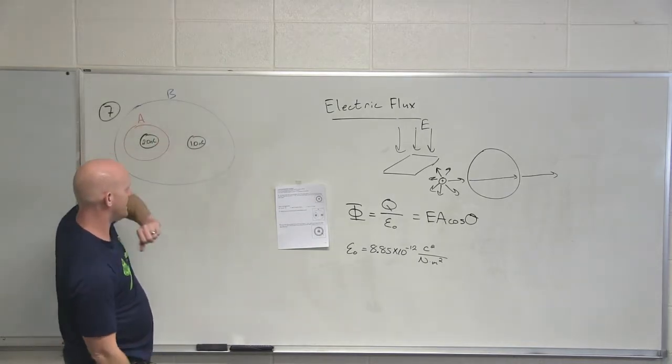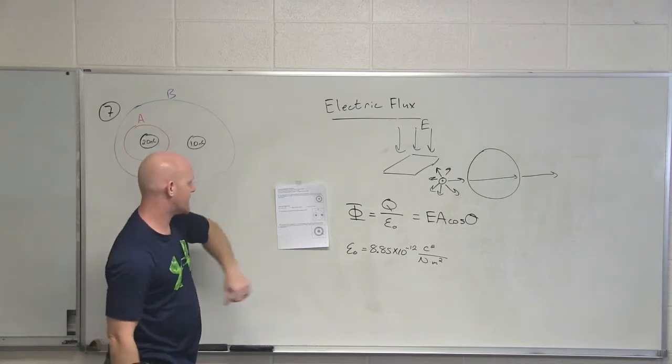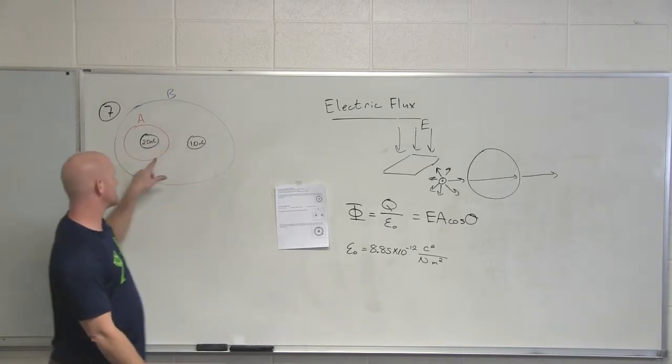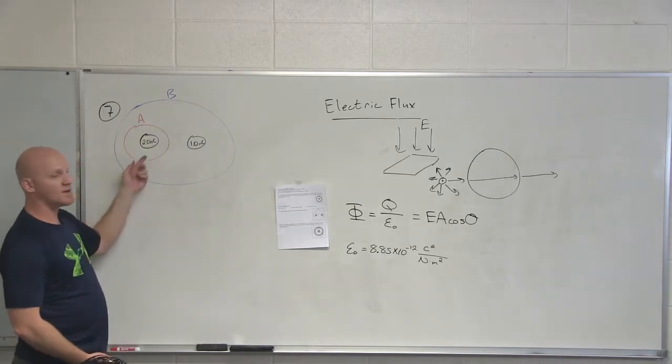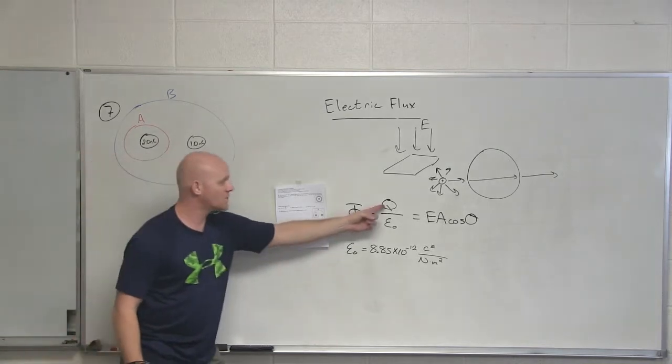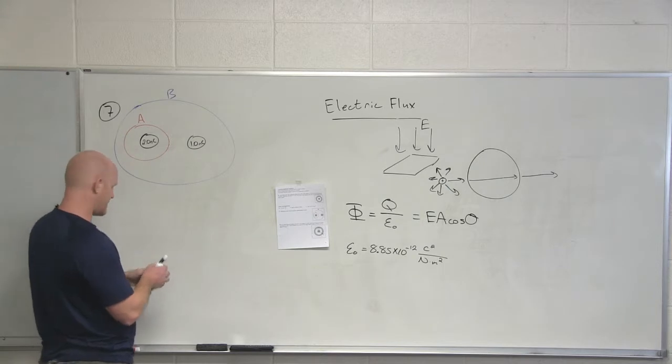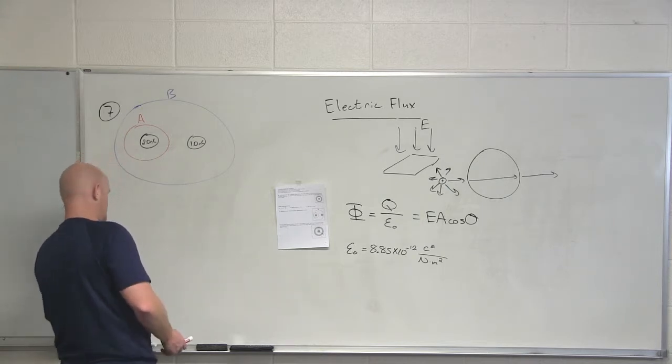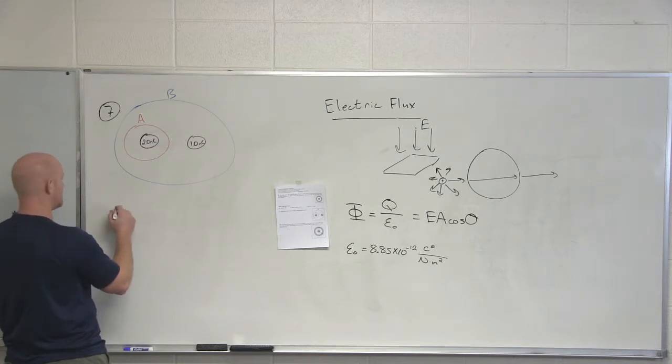Question number seven gives you this lovely diagram. It says what are the electric fluxes through the spheres labeled A and B? And so in this case the only thing you gotta know is what charge ultimately resides in a certain sphere and you can quickly get the flux. So in this case if I wanted to figure out the flux, the electric flux for sphere A, what's my lovely formula?